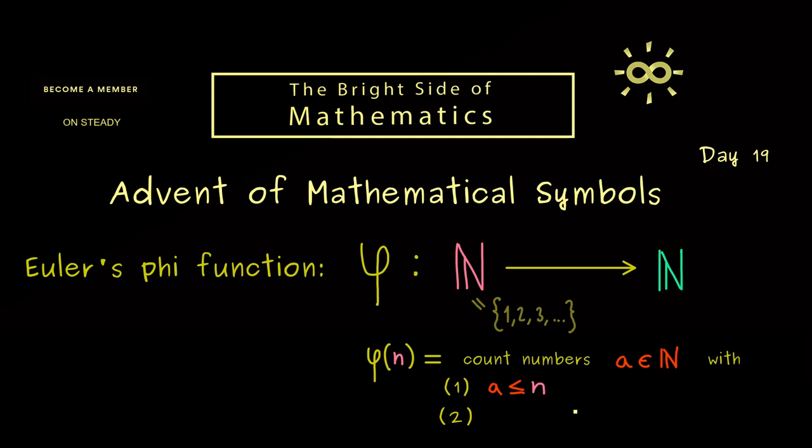Then the second property tells us that a and n don't have a single common divisor, of course except 1, because 1 divides everything. Hence we can write this as the greatest common divisor of a and n equals 1. In mathematics, then we say that a and n are mutually prime.